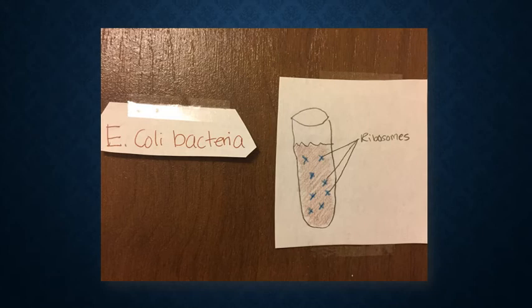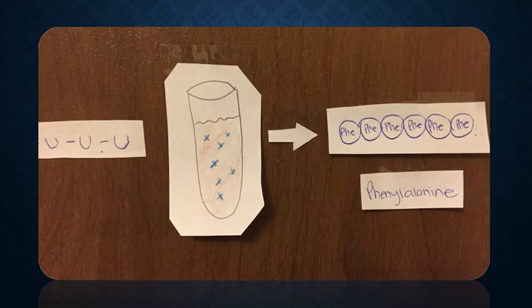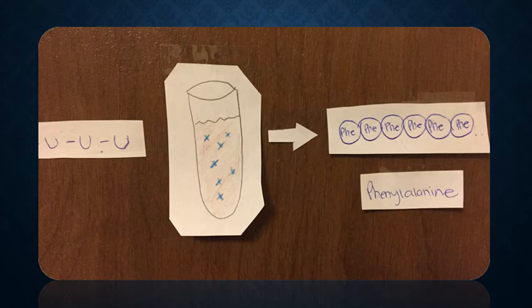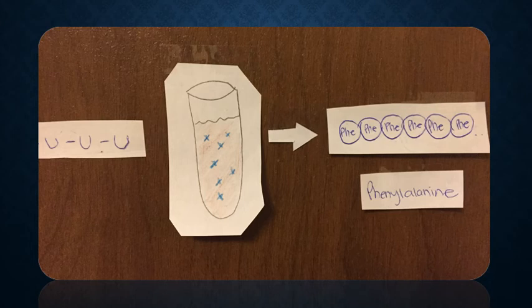So when Nirenberg was away, Matthaei's discovery was basically he put poly-U RNA, which the code is basically UUUU, to the E. coli extract and found out that it formed a long radioactive polypeptide chain. When translated, they found that the genetic code for UUU is the amino acid phenylalanine.